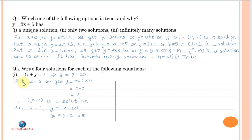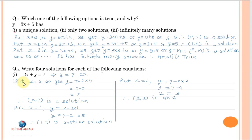Therefore (1, 5) is another solution. Put x equal to 2, we get y is equal to 7 minus 2 into 2, therefore (2, 3) is another solution. Put x equal to 3, therefore (3, 1) is another solution.